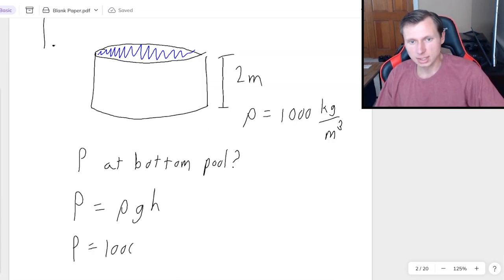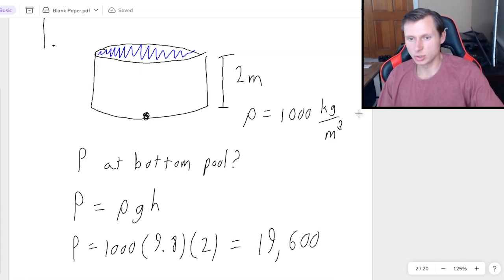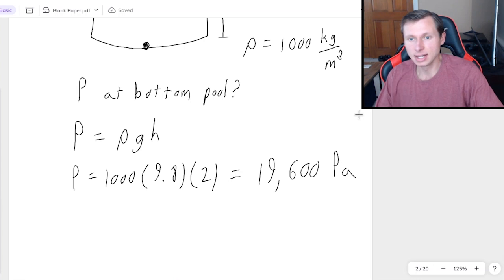So in other words, p equals 1000 times g is 9.8. And then the height in this case, if we're looking at the bottom of the pool, we're going to use that two meters right there. So times two. And I'm plugging this into calculator. We'll get 19,600. And the standard units, by the way, are pascals, which means if you want to convert this to kPa, it would be divided by 1000, 19.6 kPa.